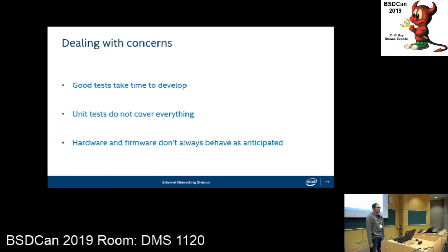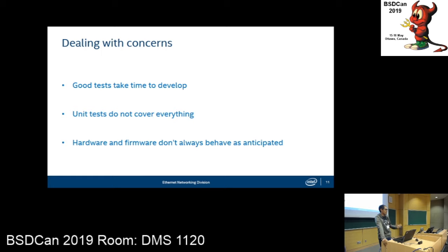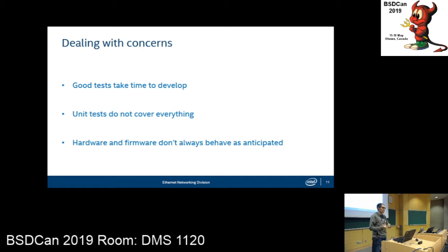Test-driven development won't solve everything. We have concerns we're willing to work with: good tests take time to develop. Part of it is thinking about what you should be testing, and tests can be two or three times more code than the actual feature you're testing. It's just slower for developers because you have to write the tests and the code, instead of hoping that validation doesn't find any bugs. Unit tests also can't cover everything — you're running tests before you write the code and may not have a complete understanding of how things are supposed to work, and you just can't anticipate every bug.